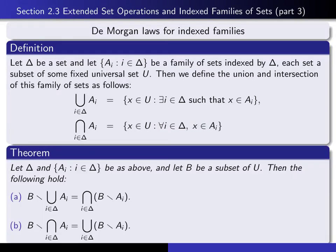Now, if in addition to our indexed family of sets we give ourselves a set B, which is a subset of U, then the following hold. The set theoretic difference of B with the union of all of the sets in the family is the same as intersecting over all sets in the family the set theoretic differences B minus a sub i. Similarly, the set theoretic difference of B with the intersection over the entire family equals the union of all the differences B minus a sub i. Notice there's a flipping: union moves to intersection, and intersection changes to union.